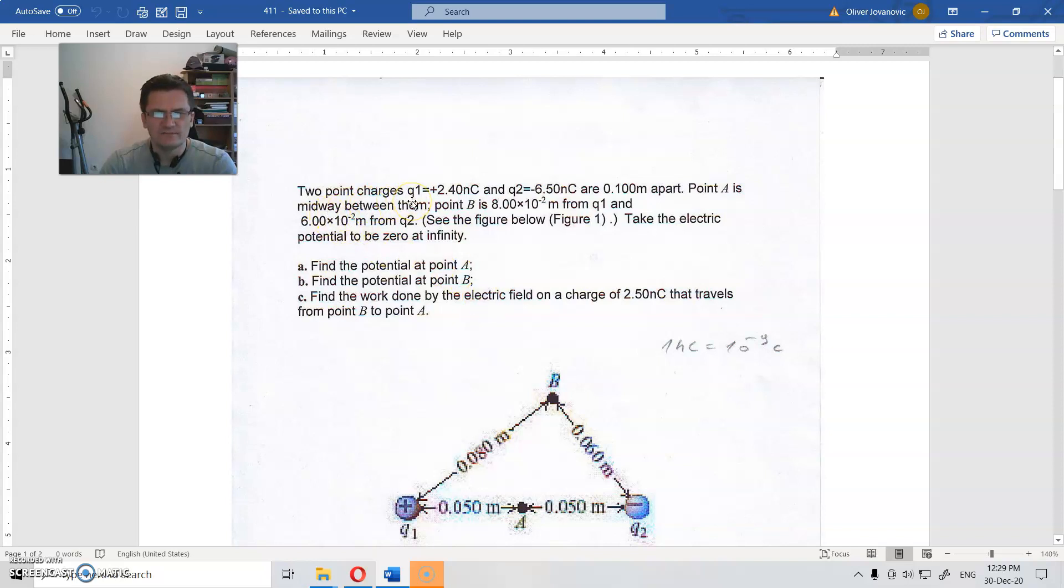Two point charges, Q1 and Q2 - this is positive, this is negative - are 0.1 centimeter apart. Point A is midway between them, and point B is here, as in the picture.